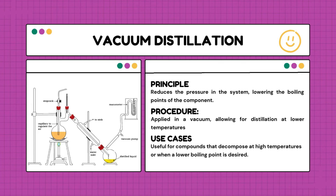In the procedure of vacuum distillation, instead of distilling under regular atmospheric pressure, the process happens in a vacuum where the pressure is intentionally reduced. This change in pressure lowers the boiling point of the components. With the drop in pressure, components start transforming into vapor at lower temperatures than they would under normal conditions. This reduced temperature means a gentler distillation process, especially useful for components that might break down at high temperatures. Vacuum distillation is used when components cannot handle high heat or require excessive heat to break down.